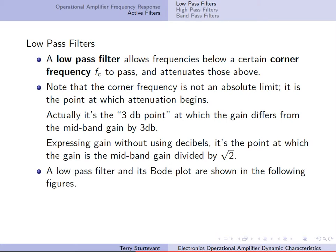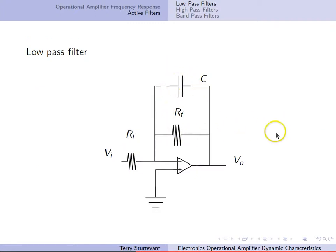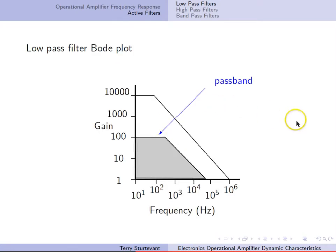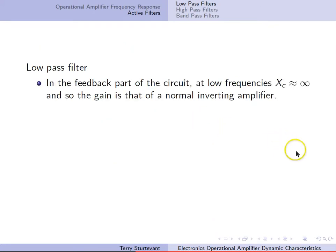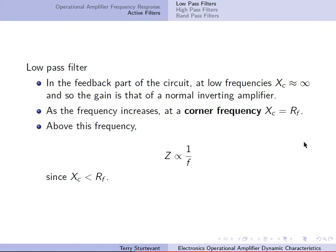A low-pass filter and its Bode plot are shown here. There are many designs for filters — the ones shown here are simple to analyze. This is an inverting amplifier with a capacitor in parallel with the feedback resistor. At low frequencies, the capacitor looks like an open circuit, so it behaves like a normal inverting amplifier. At high frequencies, the capacitor looks like a wire and shorts out the feedback resistance. On the Bode plot, the pass band extends to the corner frequency, above which gain rolls off. At the corner frequency, the capacitive reactance equals the feedback resistor. Above this frequency, the impedance is inversely proportional to frequency.